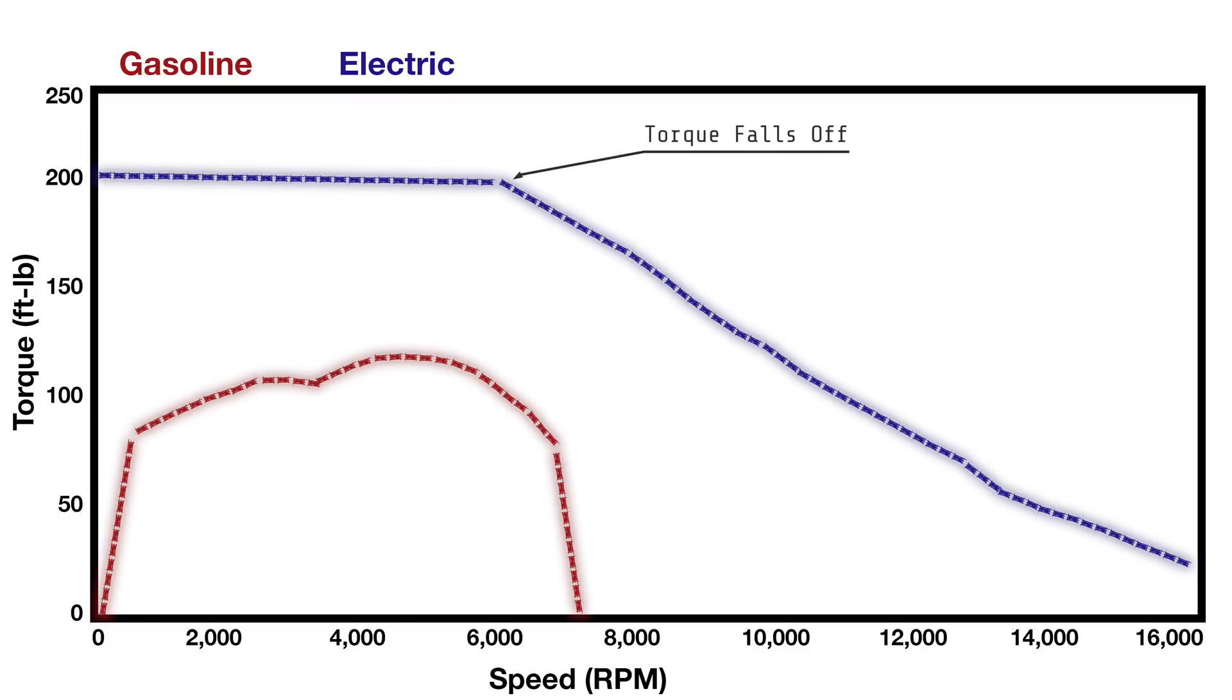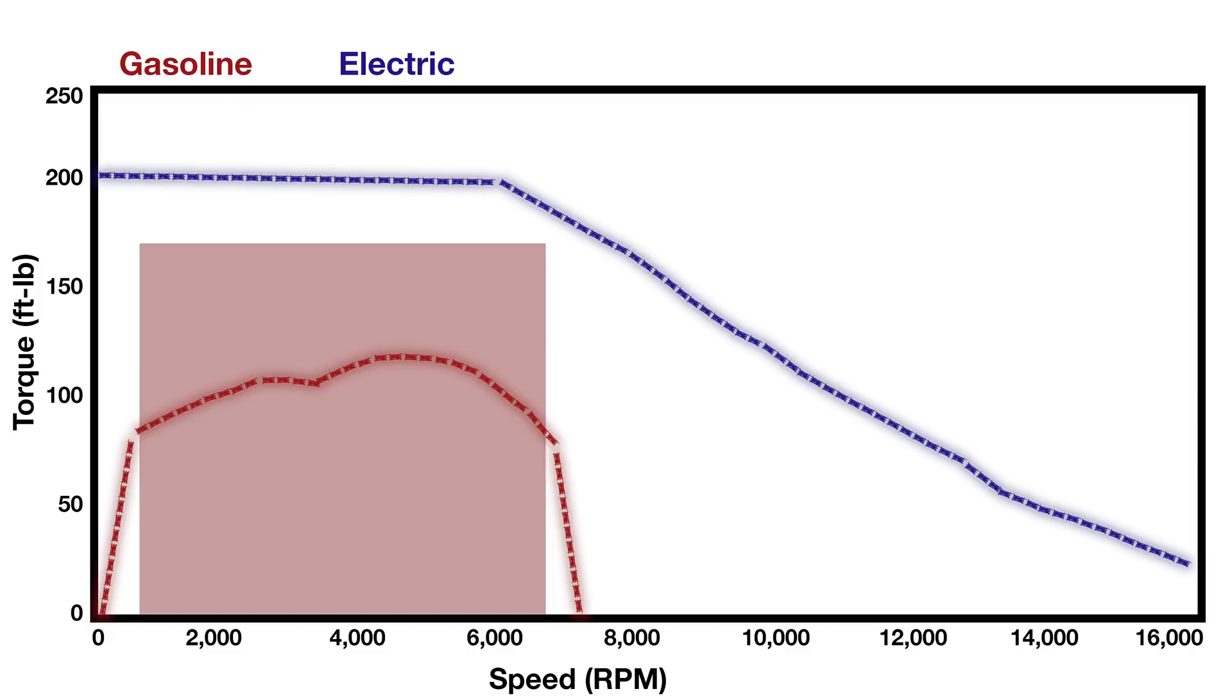The EV torque curve starts off high until a certain RPM point where it starts to taper off. This is precisely why cars have transmissions. In the case of the gasoline car, the range where the engine output is optimized is limited, and a 5 or 6 or now even 9 speed transmission allows the car to continue to speed up while keeping the engine in this peak RPM range.